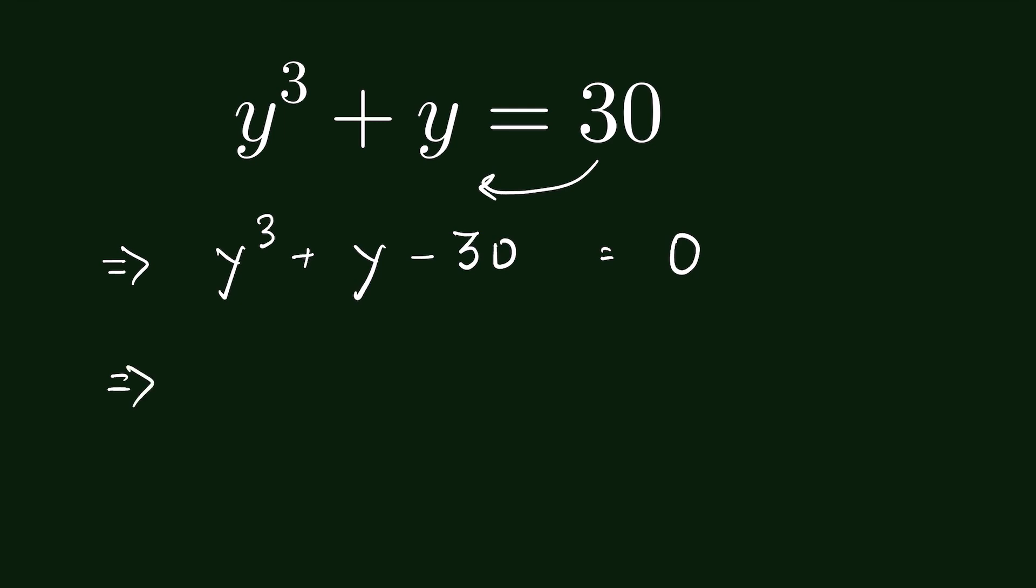Or y cube plus y minus 30, we can write it as minus 27 minus 3 is equal to 0.